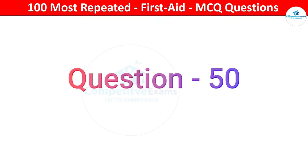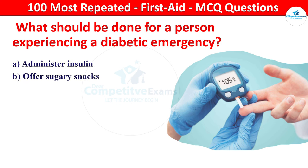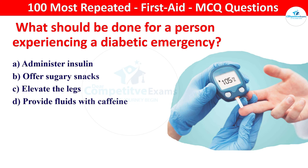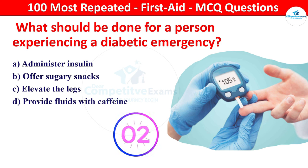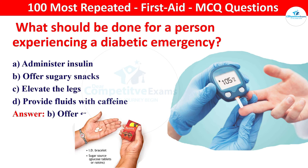Next question: what should be done for a person experiencing a diabetic emergency? Your options: administer insulin, offer sugary snacks, elevate the legs, or provide fluids with caffeine. The right answer is offer sugary snacks. Sugary snacks can help raise blood sugar levels in a diabetic emergency.